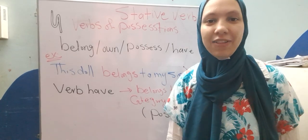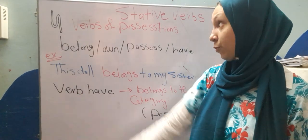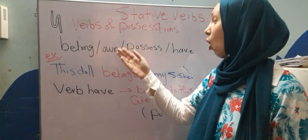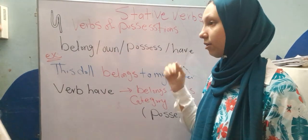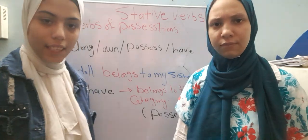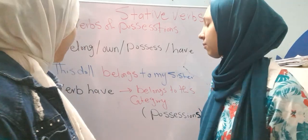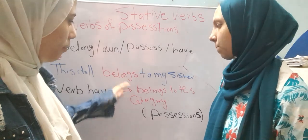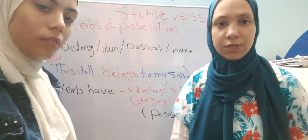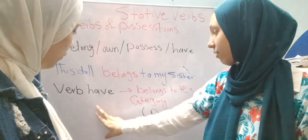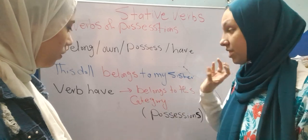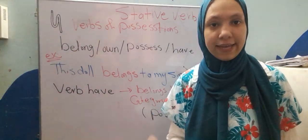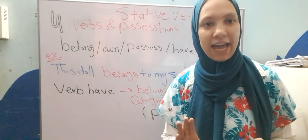The fourth group is verbs of possession: belong, own, possess, and have. For example: 'This dog belongs to my sister' — that is a stative verb. Note that the verb 'have' belongs to this category when it means possession.